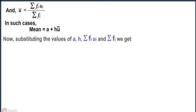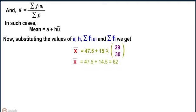Now, substituting the values of a, h, summation fi ui, and summation fi, we get x bar equals 47.5 plus 15 into 29 by 30. This implies x bar equals 47.5 plus 14.5 equals 62.